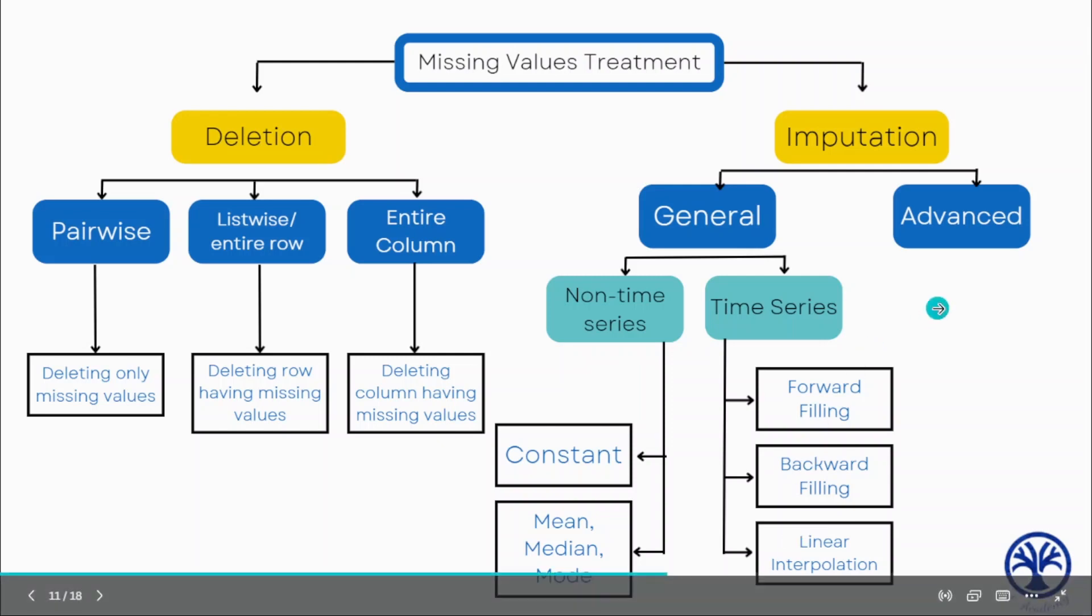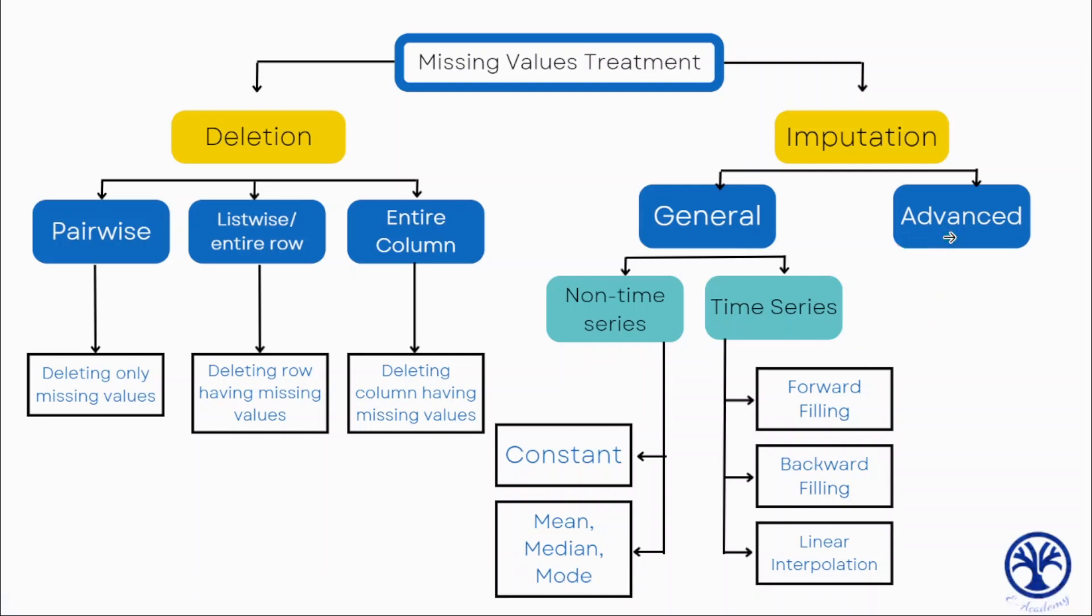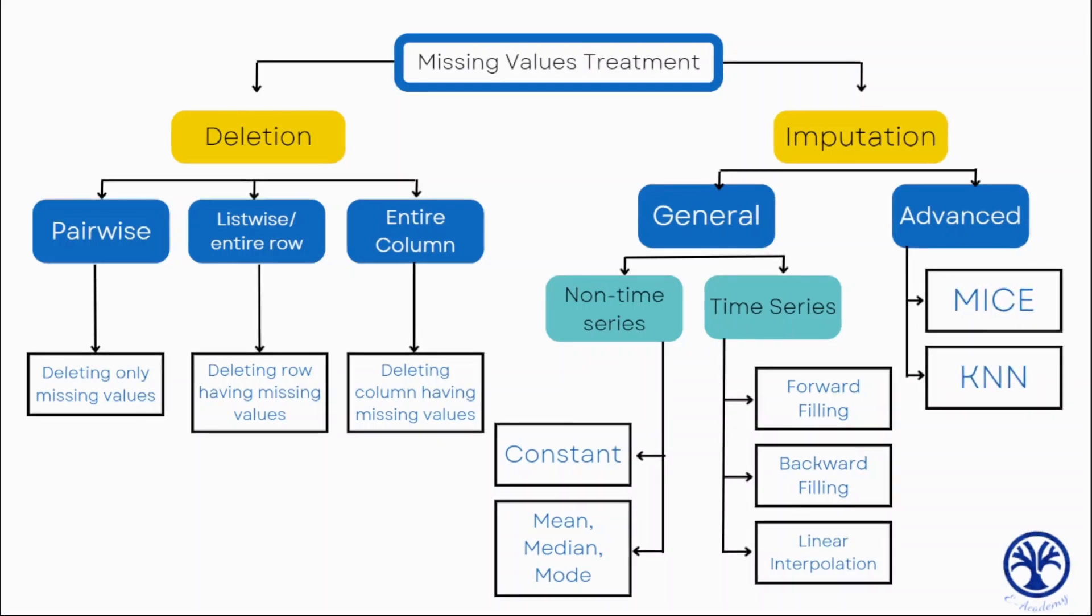The advanced approach of imputation deals with predictive modeling. The first is MICE, which is short for Multiple Imputation by Chained Equations. This creates multiple imputed datasets. We can also use KNN, a machine learning algorithm, to find the missing values. We'll cover each of these approaches in detail and see what situations to use them in our upcoming videos.